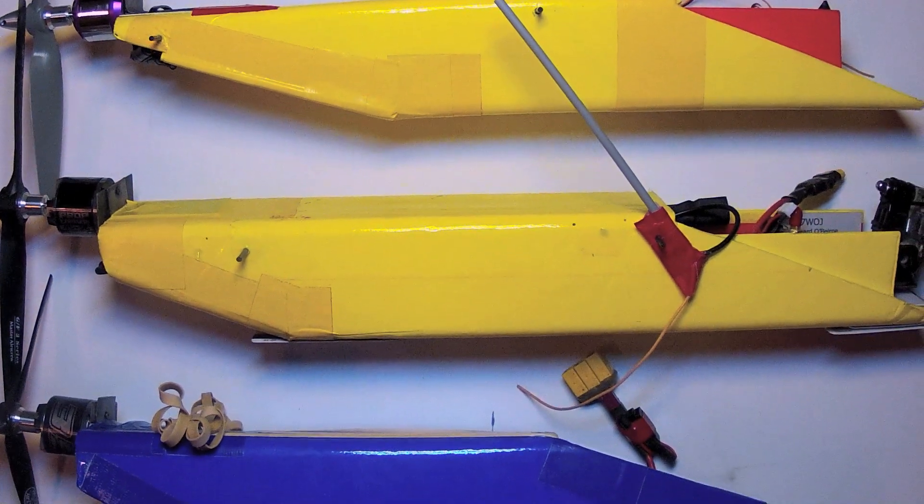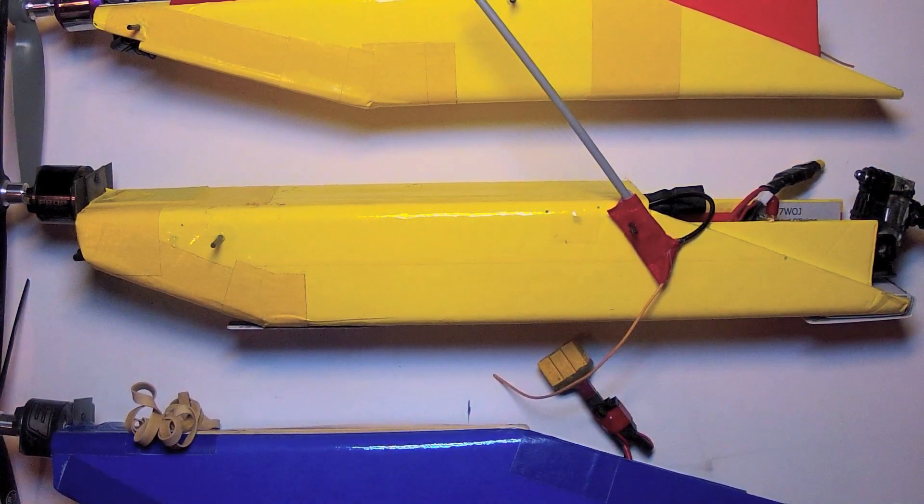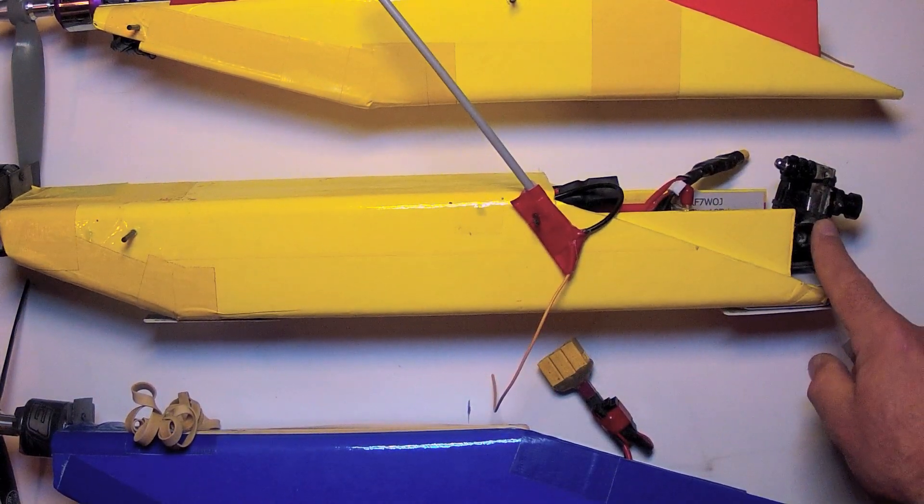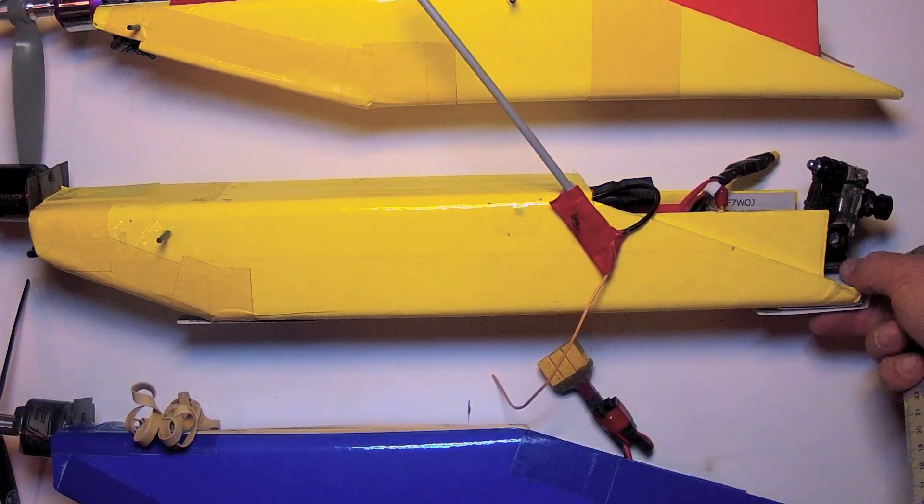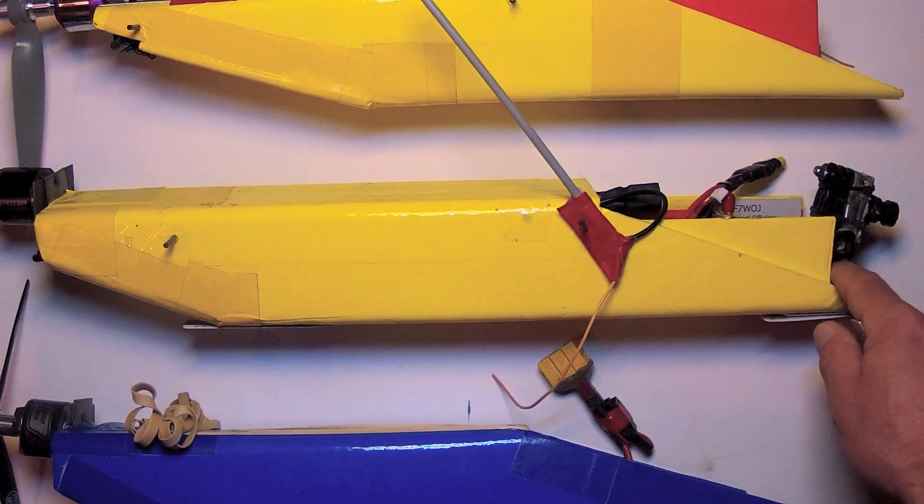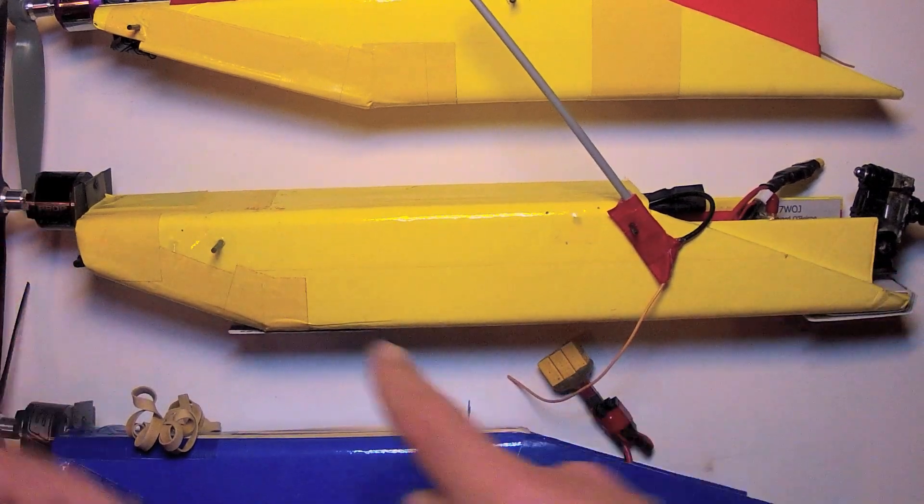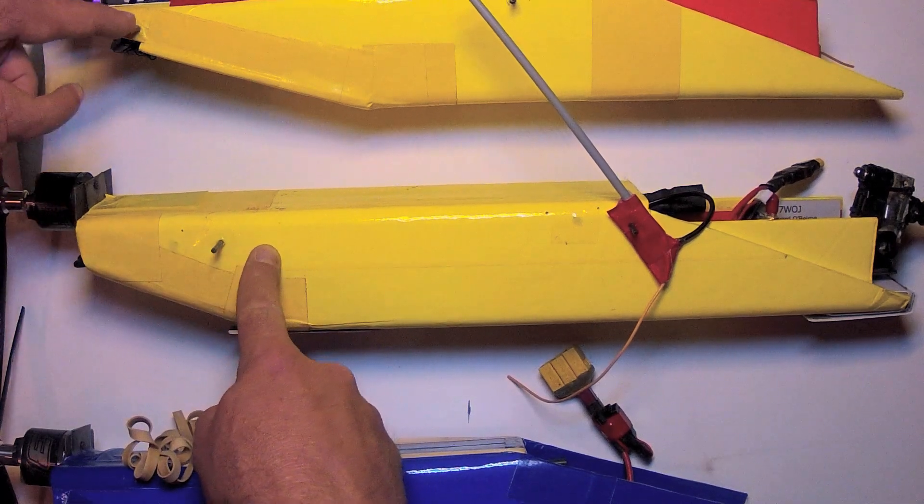This one in the center is my medium range FPV model. It's got a light camera, a Dragon Link receiver mounted approximately here, 4000 mAh battery, and a light OSD.